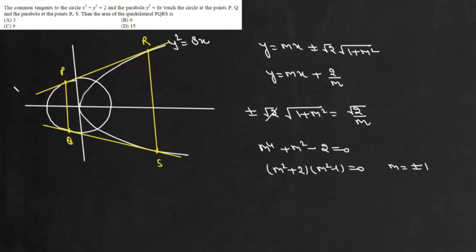So equation of one of the line is y equals x plus 2 and equation of this other tangent is y equals minus x minus 2.